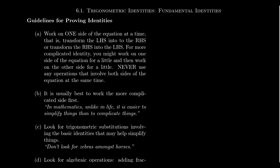The first guideline we did talk about before as one of our tips for proving trigonometric identities, but it's important enough to mention twice. When you are trying to prove a trigonometric identity, work on one side of the equation at a time — transfer the left-hand side into the right-hand side or vice versa. For more complicated identities, you can work on one side for a while, then move to the other side and let them meet in the middle. But never use operations that affect both sides of the equation at the same time. We always work with one side at a time, though you can use both sides — just never simultaneously.